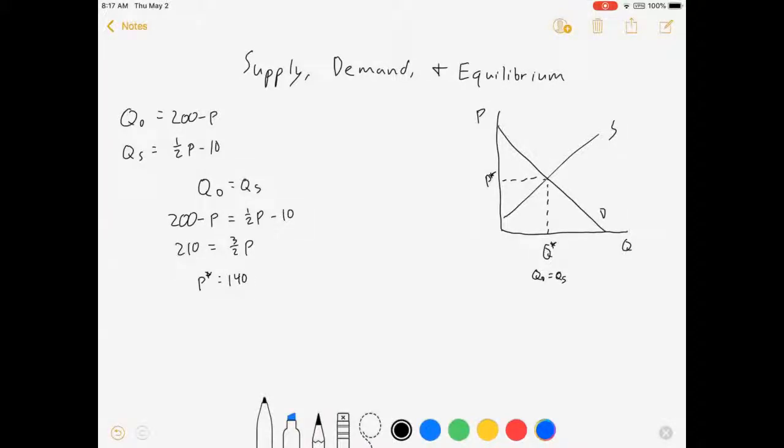So, let me put an actual number up here. Boom. Got it. Then, we can substitute that into either curve and we'll get the quantity. I could say QD equals 200 minus 140 equals 60. Or, I could say QS equals 1 half of 140 minus 10, which is also 60. It doesn't matter which curve I plug it into, as long as I do it right, it's going to be 60 either way. So, let me add that in. Q star is equal to 60. We got our equilibrium. That wasn't too bad.